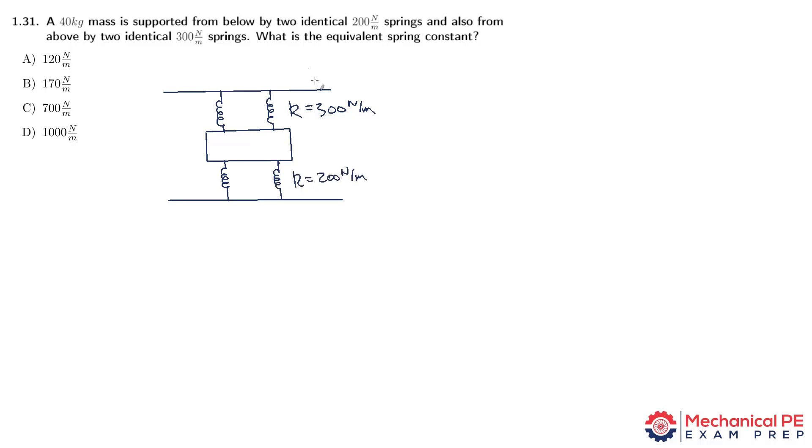In order to find the equivalent spring constant, we have to understand whether these springs are arranged in parallel or in series. If you just look at the top or the bottom by themselves, it'll be clear that they're in parallel.